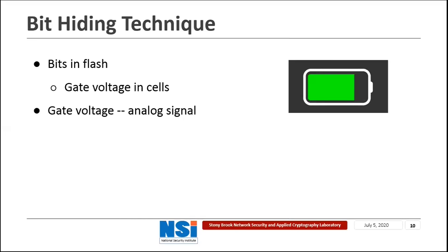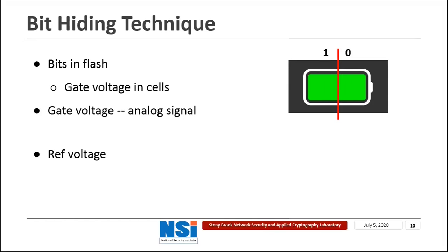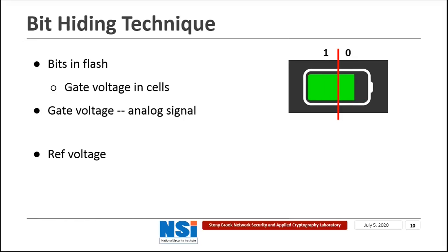While in an erase operation, the gate voltage in cells decreases to zero. As we know, the gate voltage is an analog signal. In order to represent digital bits, we need another thing called the reference voltage. A cell with a gate voltage larger than the reference voltage is set to store a bit zero, while a cell with a gate voltage smaller than the reference voltage is set to store a bit one.